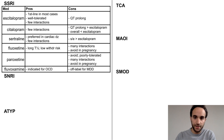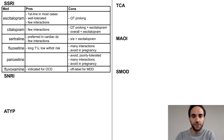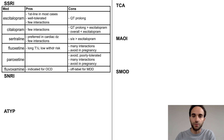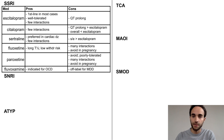Starting with the SSRIs, escitalopram is generally going to be your first choice based on its favorable side effect and tolerability profile, and that it typically does not interact with other drugs, as it is only a weak CYP inhibitor. For most purposes, escitalopram is superior to citalopram. For example, citalopram has a higher risk of QT prolongation.